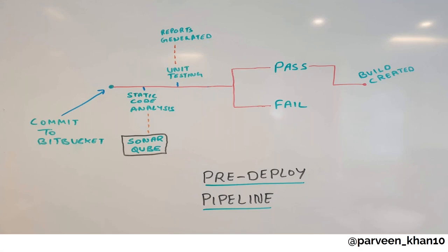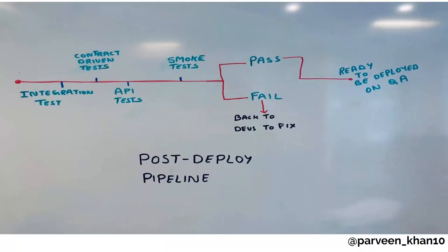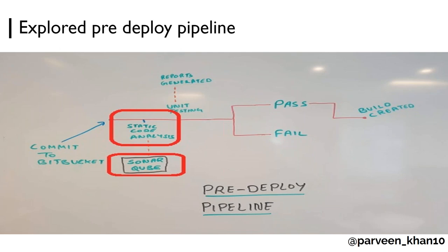We came back together again and decided to go with two different pipelines. The pre-deploy pipeline had only two stages: static code analysis and unit testing. Only if those two stages passed would we proceed to the post-deploy pipeline, which included integration tests, contract-driven tests, API tests, and smoke tests. I had doubts about why we had pre- and post-deploy, and the answer was that pre-deploy tests don't need an environment and can run locally.